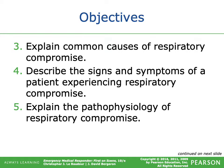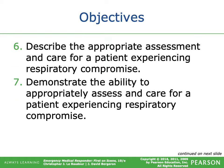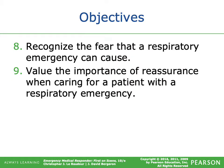Number three: explain common causes of respiratory compromise. Number four: describe the signs and symptoms of a patient experiencing respiratory compromise. Number five: explain the pathophysiology of respiratory compromise. Number six through nine cover assessing and caring for a patient, demonstrating that ability, recognizing the fear a respiratory emergency can cause, and valuing the importance of reassurance.